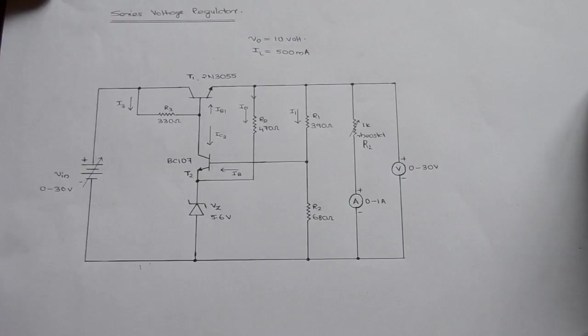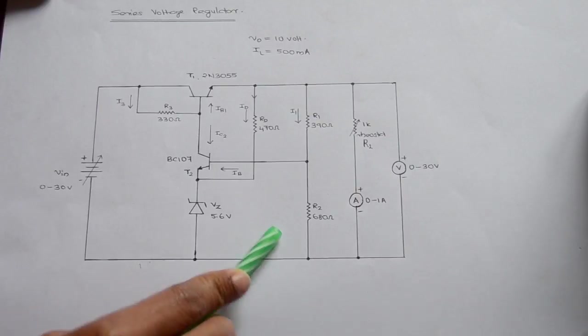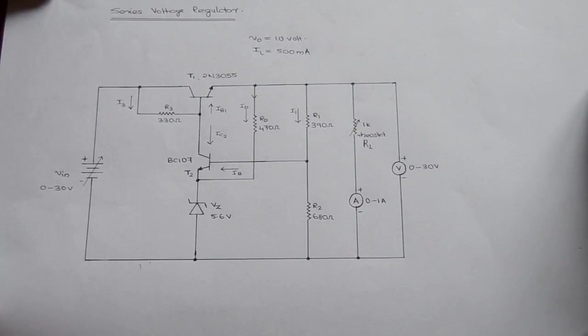This is the circuit of a series voltage regulator. It is so called because the power transistor is connected in series with the load. It is designed for an output voltage of 10 volt and a load current of 500 milliamperes.